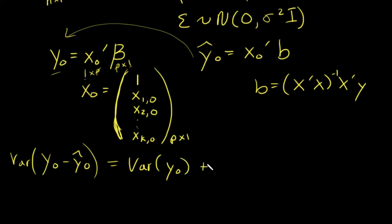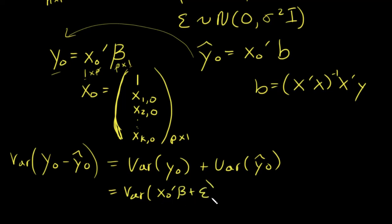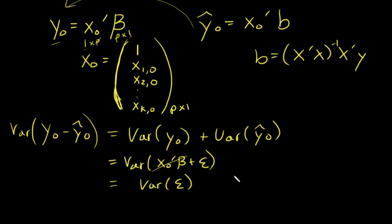The variance of y naught minus ŷ naught equals the variance of y naught plus the variance of ŷ naught. The variance of y naught — due to our model — is the variance of x naught transpose times beta plus epsilon naught. Now x naught and beta are non-random, so their variance is zero. This is basically just the variance of epsilon naught. And since epsilon naught is just a single model error term, we don't need the identity matrix — so this is just sigma squared.